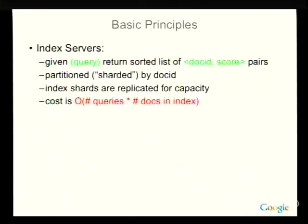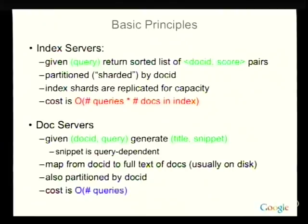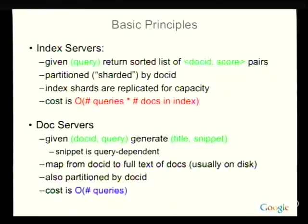On the doc server side, given a doc ID and a query, you want to generate a title and a snippet. One early thing Google did differently from other search engines was that the snippet was query-dependent — it used the words in the query to decide what summary to show, rather than just showing the first 30 words. That's a really important innovation, but it means you can't pre-compute snippets; you have to do it for every document-query pair. The cost of doc servers is order: number of queries, so from a performance standpoint the cost is dominated by the index serving portion.